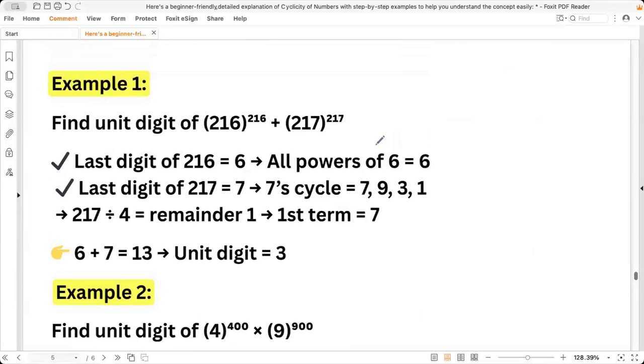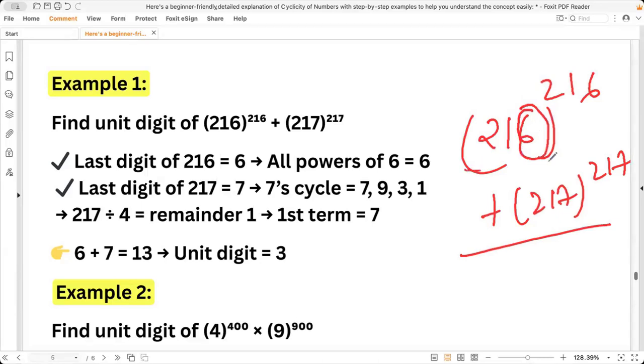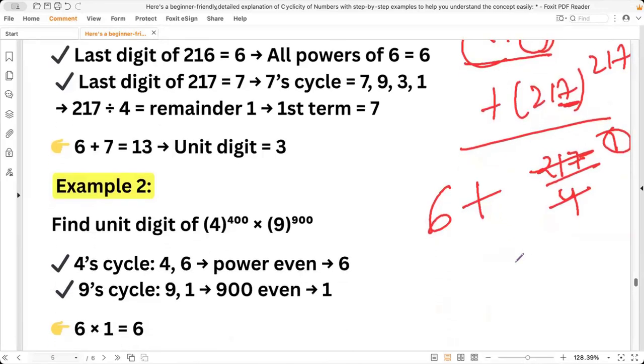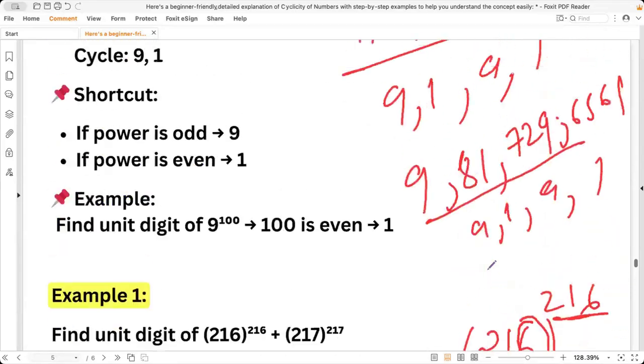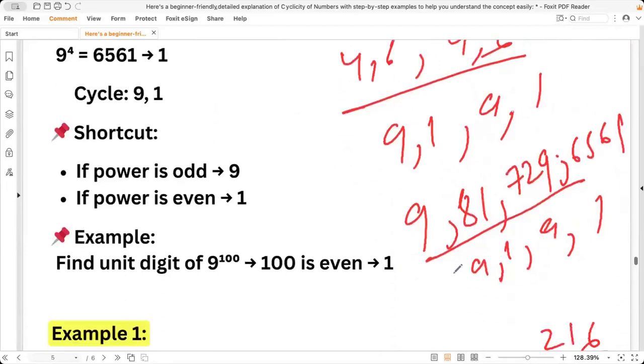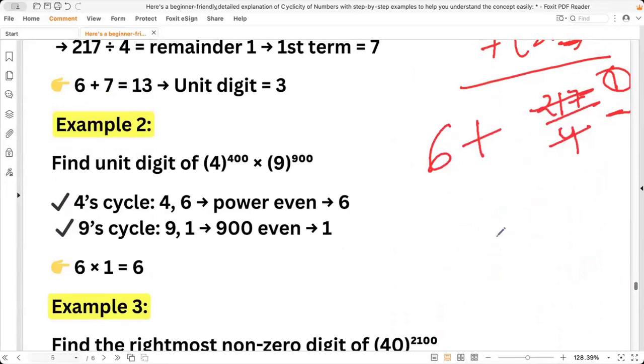Now let's see some actual UPSC style questions. The question is 216^216 + 217^217. What will be the unit digit? We are just concerned about the unit digit and the cyclicity of six. Cyclicity of six is simple - every time it will be six only. And here we will see the cyclicity of seven. 217 divided by four, it will leave the remainder one. The cyclicity of seven is 7, 9, 3, 1. The first one will be seven. So six plus seven equal to 13. 13 has three as the unit digit. So three will be the answer.